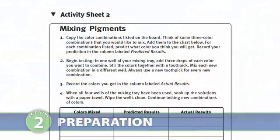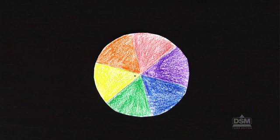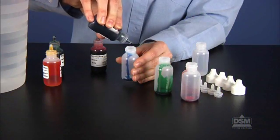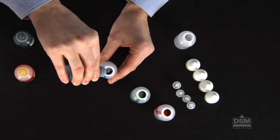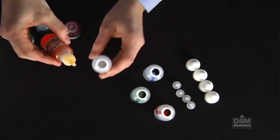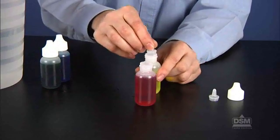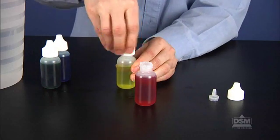To prepare for this activity, make a copy of Activity Sheet 2 for each student. Each student will also need his or her color wheel from Activity 1. Prepare a set of dropper bottles filled with blue, green, red, and yellow colored water for each team of students. Put 10 drops of a different color food coloring into each of the four bottles. Then fill the bottles with tap water, snap the tips into place, and screw on the caps.